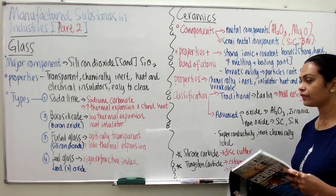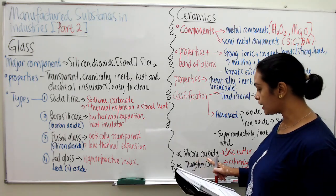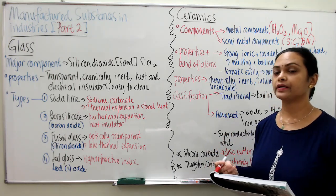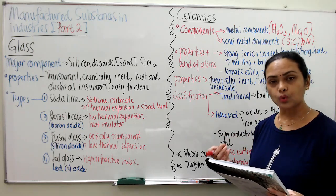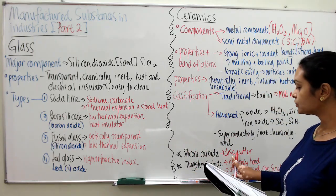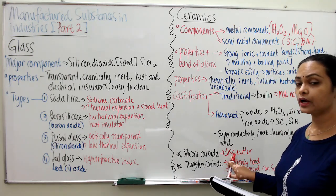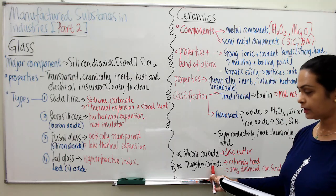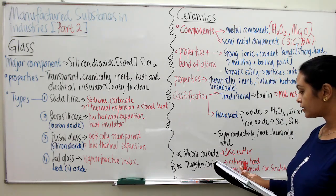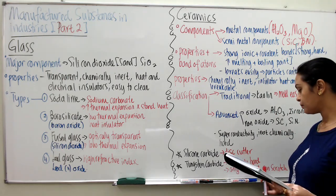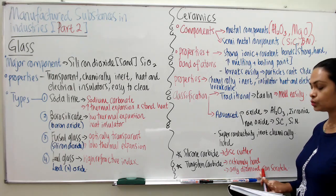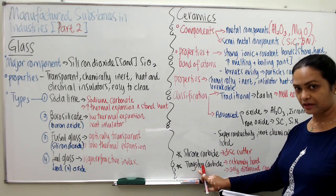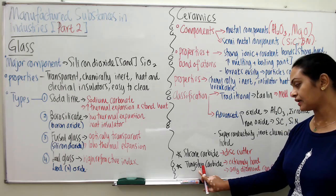Another advanced ceramic is silicon carbide, which is used as disc cutters — powerful tools to cut concrete, metal, tiles, ceramics, and stone — because it is very hard and strong. Tungsten carbide is another ceramic that contains some metal (tungsten). It is extremely hard and can only be scratched by diamond. Tungsten carbide is one of the toughest and hardest ceramics.